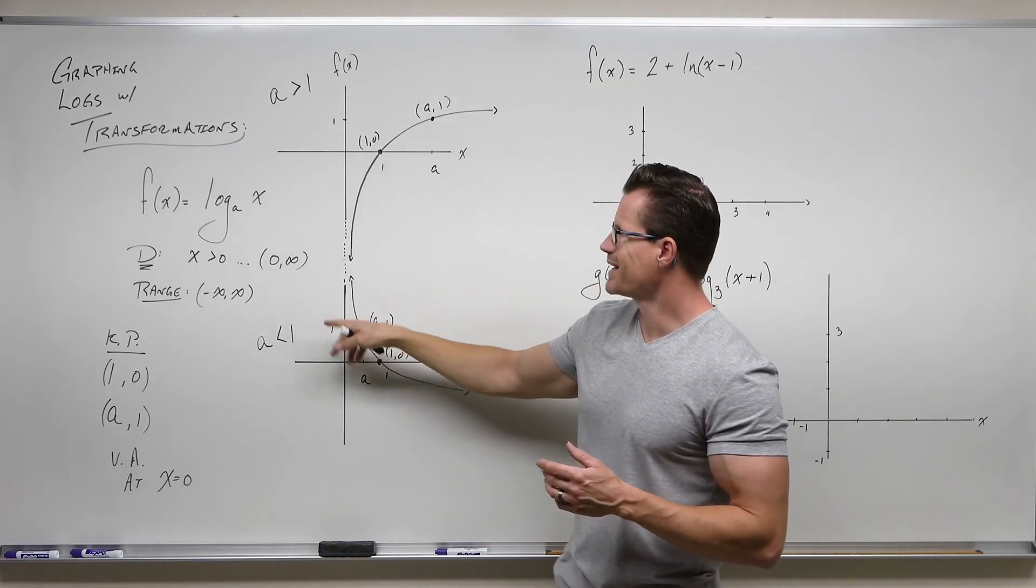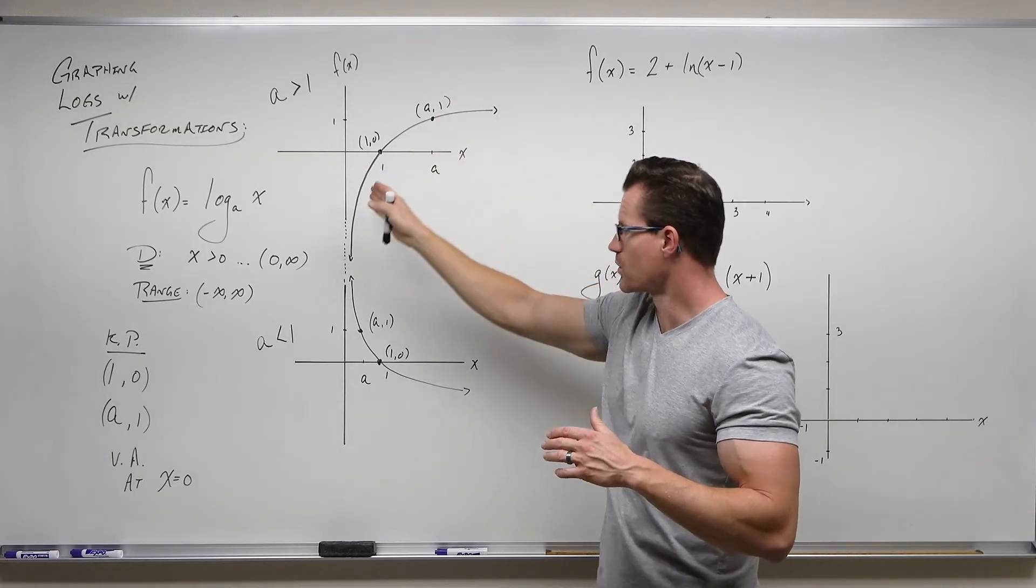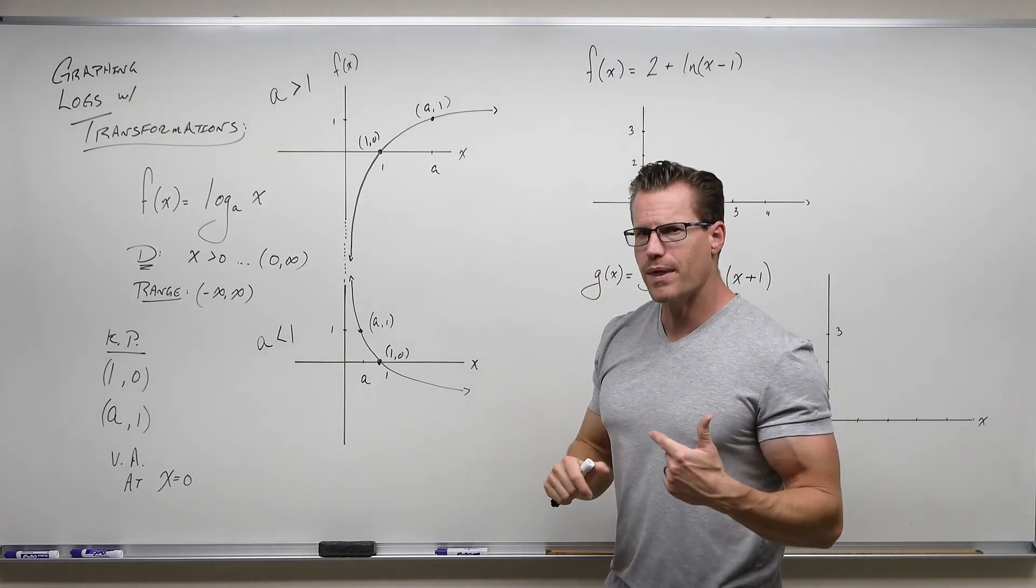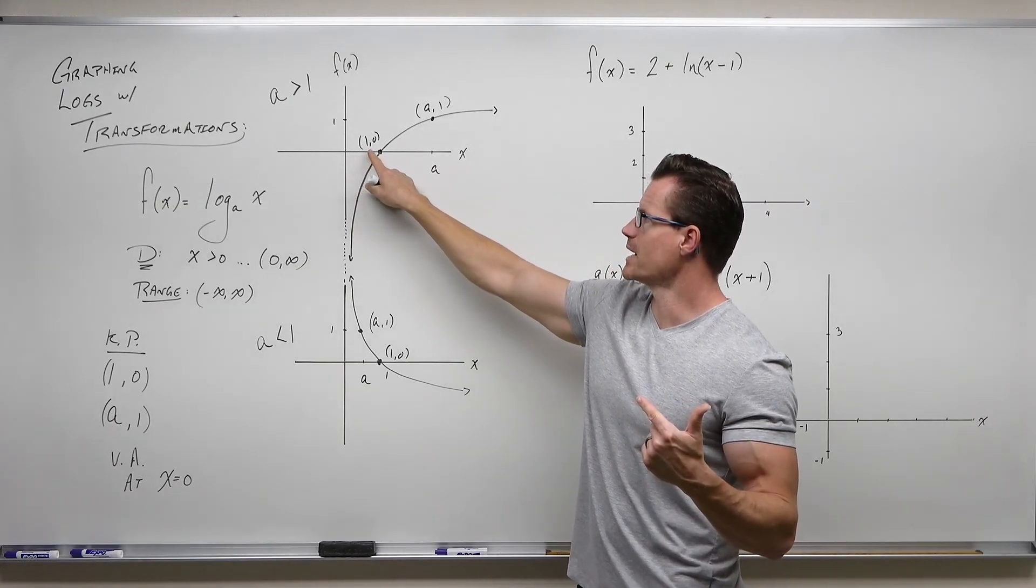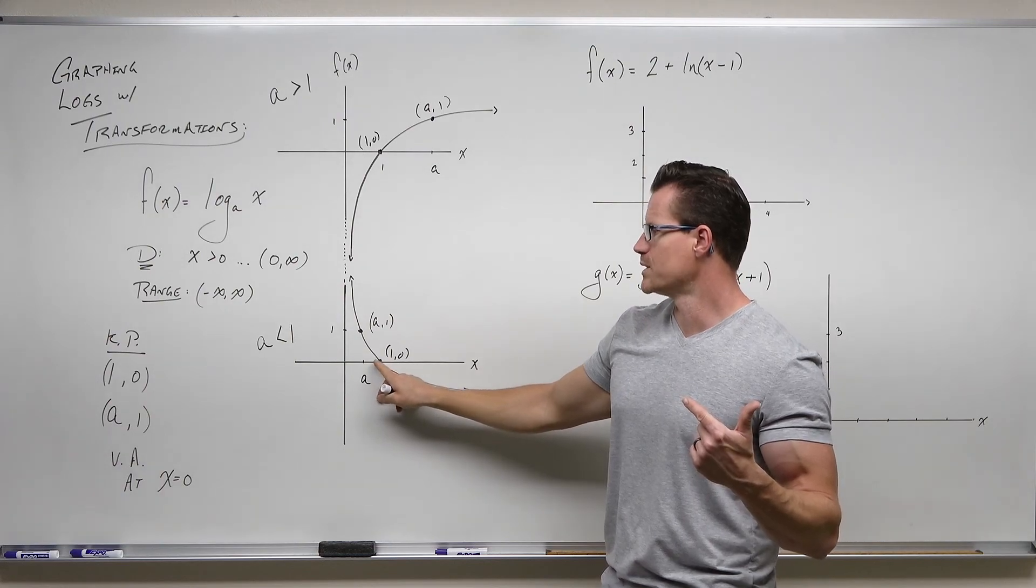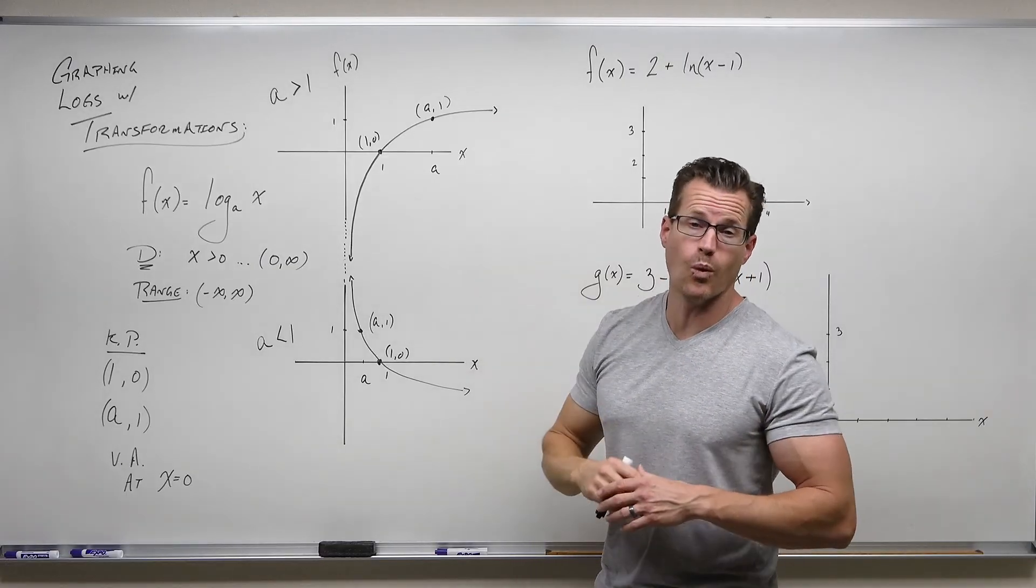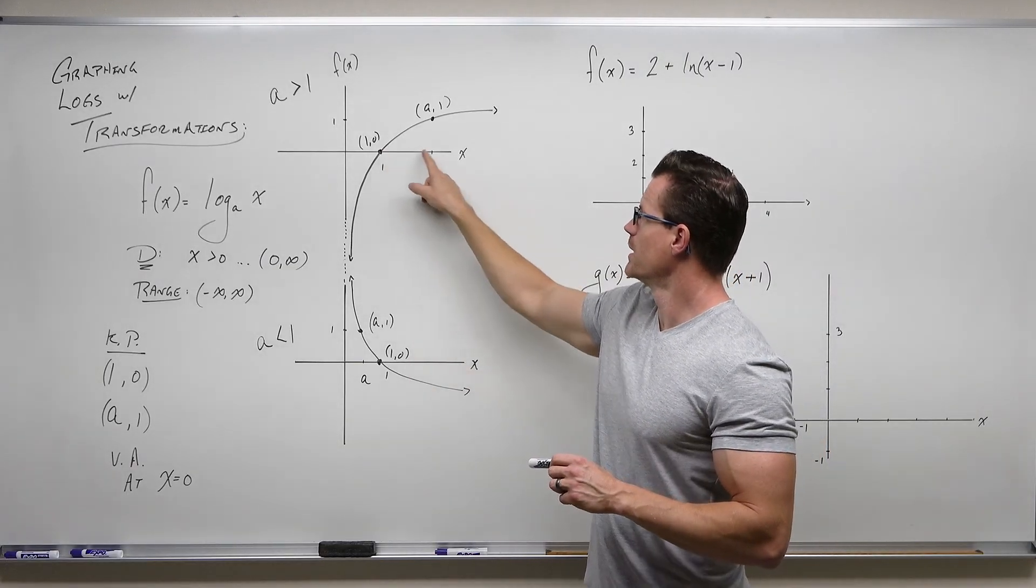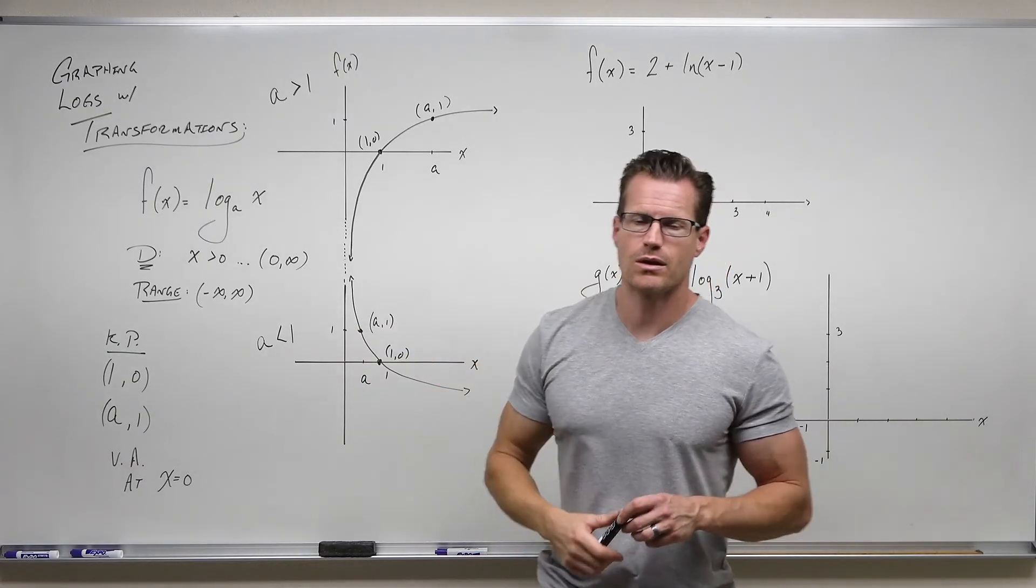Key points of 1, 0, a, 1. Depending on whether a is greater than 1 or less than 1, we have this increasing or decreasing graph. We know that because if a is more than 1, then our key point of a, 1 would be to the right of 1. If a is less than 1, our key point of a, 1 would be to the left of 1. That would give us an increasing or decreasing graph because the output would be 1 in both those cases.